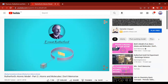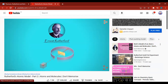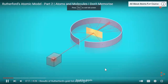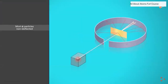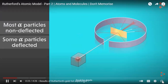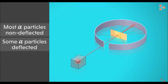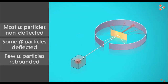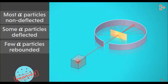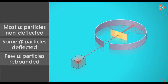Rutherford's gold foil experiment gave him interesting results. Most of the fast-moving alpha particles passed straight through the foil and hit the detector. However, some particles got deflected by small angles, and lastly, a few alpha particles also rebounded. These three observations made Rutherford think the plum pudding model is not correct. Let us take a simplified example to understand the inferences.